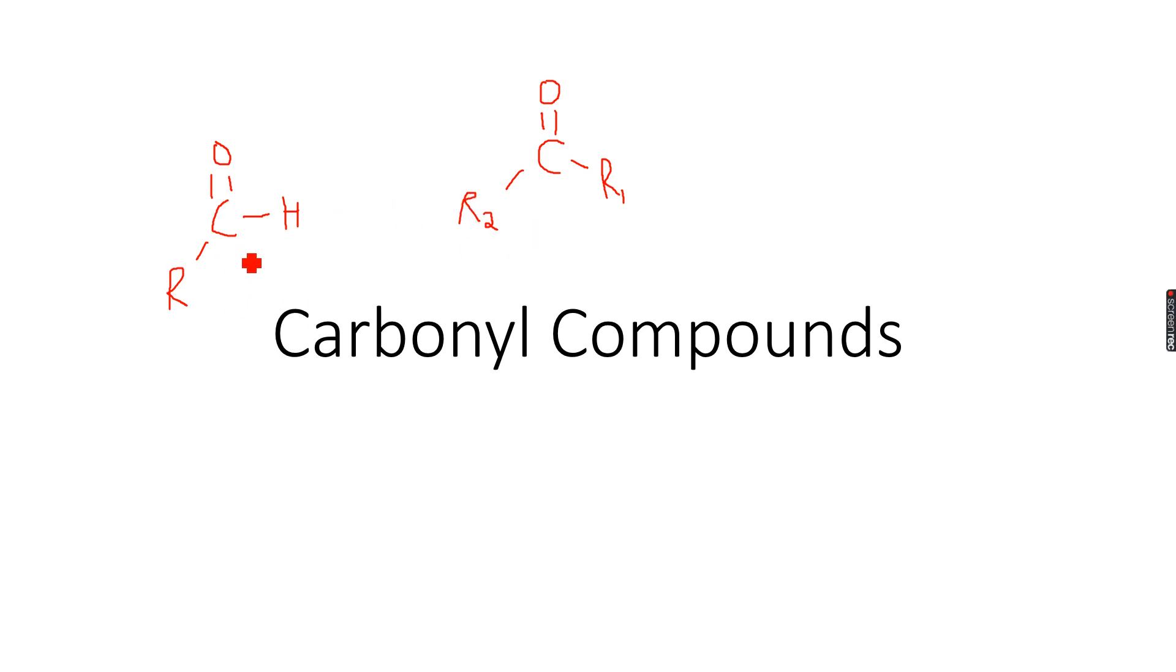In layman's words, aldehydes have the carbonyl functional group at the end of the chain at the terminal carbon atom and ketones have the carbonyl group in the middle of the chain on a carbon atom in the middle. These are aldehydes, these are ketones.